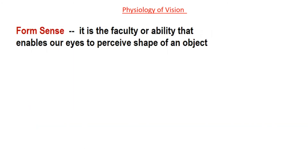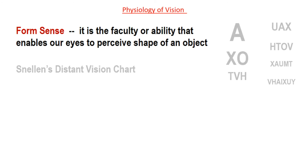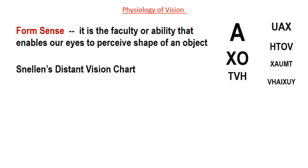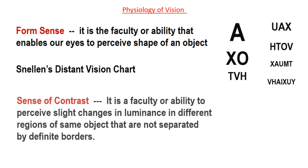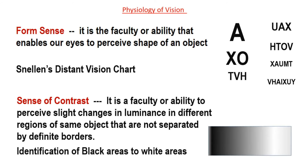Then is form sense. It is the faculty or ability that enables our eyes to perceive the shape of an object, whether round or square or triangular, etc. Visual acuity testing with Snellen's distant vision chart is an example. Then is sense of contrast — it's the faculty or ability to perceive slight changes in luminance in different regions of the same object that are not separated by definite borders. Identification of different grids of black areas to white areas can be done with this faculty.